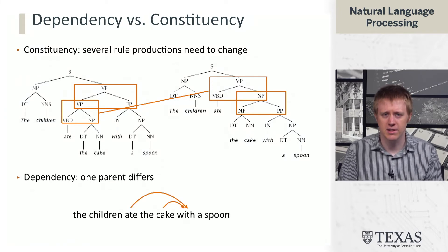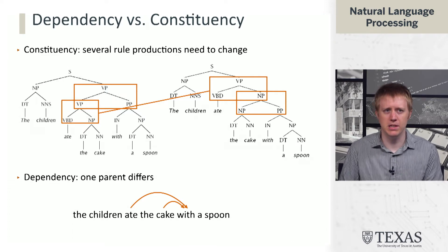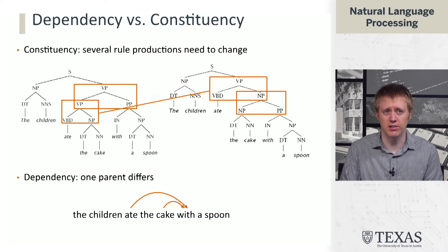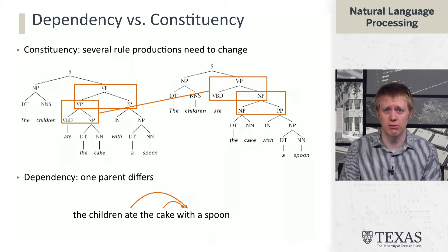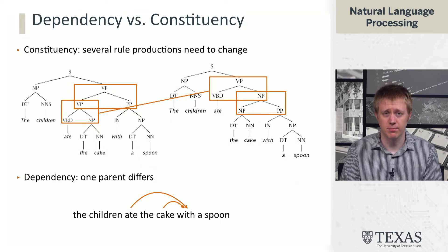In dependency, instead we make a much more direct decision about which is the parent of 'with.' So 'with a spoon' is our prepositional phrase. Does 'with' attach to 'cake' — in which case it's the cake having the spoon on it — or does it attach to 'ate,' in which case it modifies the event? The latter makes a lot more sense.